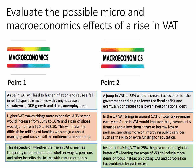What about the macro effects? I'm going to build two points here. One is that a rising VAT will lead to higher inflation and cause a fall in real disposable incomes, which in turn might cause a slowdown in GDP growth and perhaps rising unemployment. For example, if we go from 20% to 25% VAT, a TV screen would go up by about £30, and a pair of shoes would jump from £60 to £62.50. This would make life more difficult for millions of families who are just about managing. Rising VAT could cause a fall in consumer confidence and a fall in spending. Consumption, of course, is the biggest single component of aggregate demand.